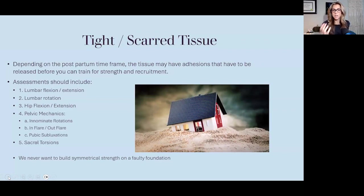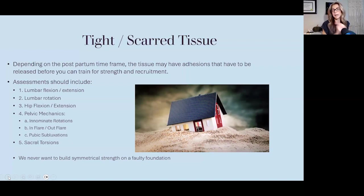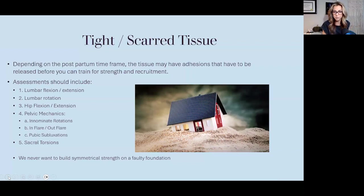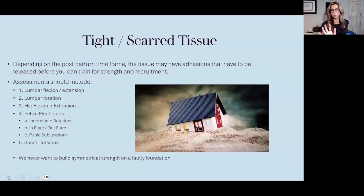We want to look at how the back is moving in flexion, extension, and rotation; what the hips look like; pelvic mechanics — innominate rotations, in-flares and out-flares, pubic subluxations, sacral torsions. We never want to build on a faulty foundation. The multifidi, psoas, piriformis, and QL — we see this a lot with sacral torsions. When the sacrum is out, we typically can blame the piriformis, psoas, multifidi, and quadratus lumborum. These are some of the deepest muscles in the body and big pain generators.